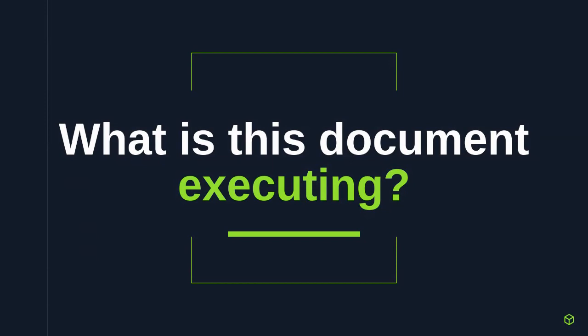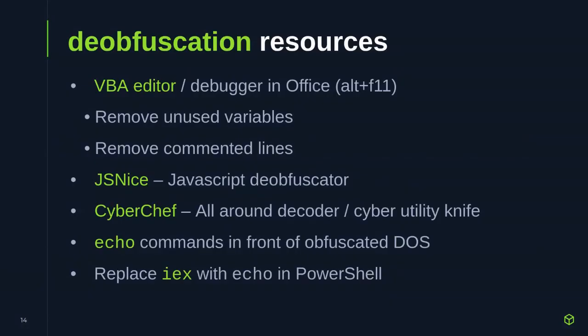Once we answer the question of how this document is executing, the next question is: what is it executing? There's an infinite number of ways that could go. It's very common that what you pull out is not going to be a clean giveaway — there's going to be some sort of obfuscation involved. The bad guys think about it from two angles: how do I obfuscate in a way that the spam filter or AV on the endpoint doesn't catch it, but also if a human opens this up, they don't just look at it and immediately know what it's doing.